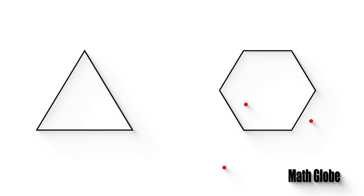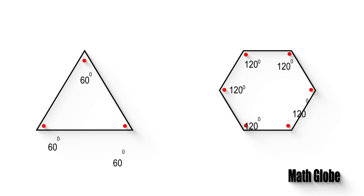First, let's calculate the internal angles of the triangle and the hexagon. As seen, we can write the internal angles as follows.